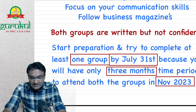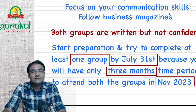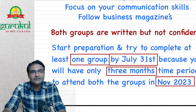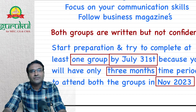We have only about three months to attend both groups in November 2023. ICAI may take another 50 to 60 days to declare the results. By the time results are declared, you must have completed at least one group's preparation. If you have any doubt, just revise all four papers of whichever group you're doubtful about.